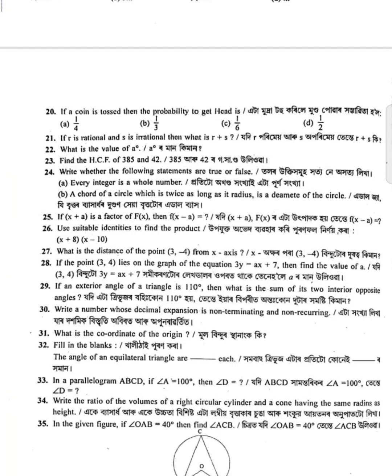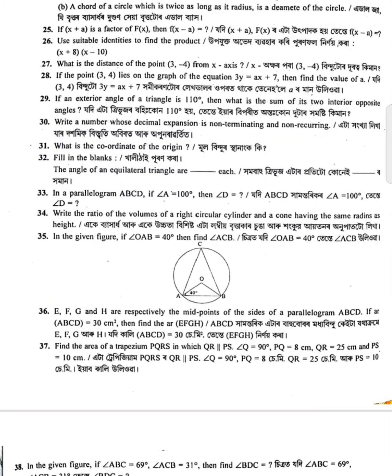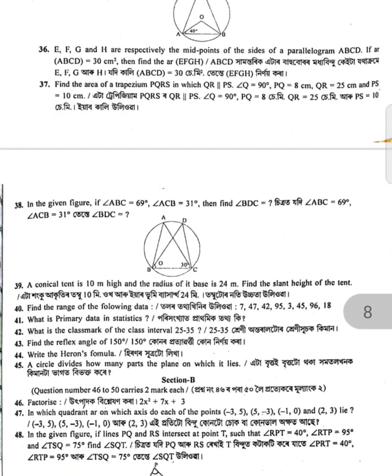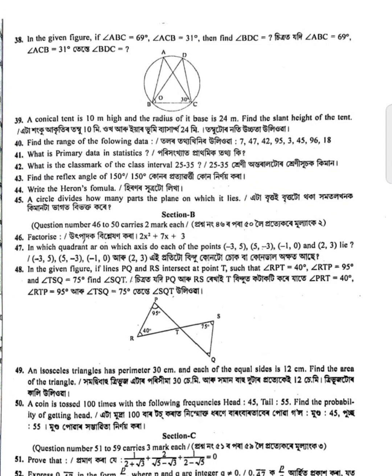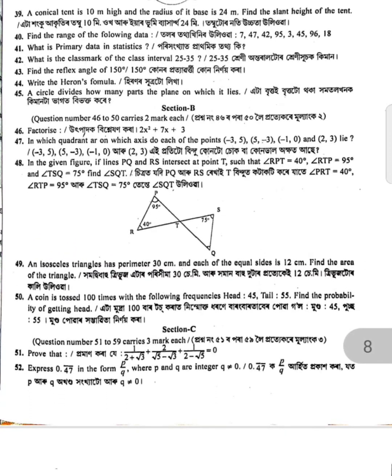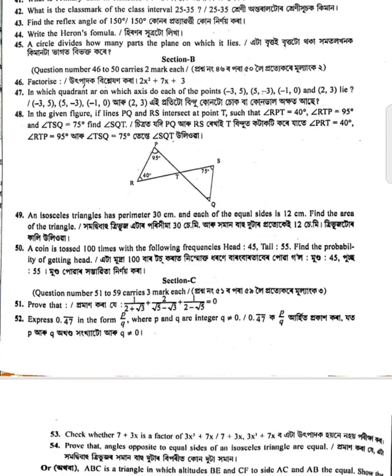Find the LCM of 385 and 42. Find the range of the following data. Write the Heron's formula. Then two more squares and also an isosceles triangle: perimeter 30 centimeters, each side of the square is 12 centimeters — find the area.